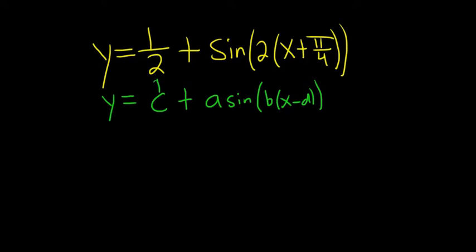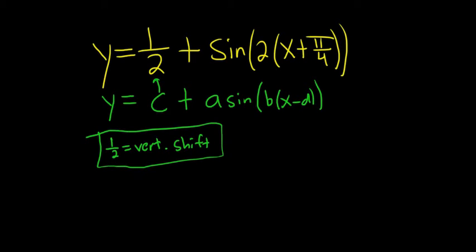For example, c here is the vertical shift. So 1 half, that's our vertical shift or vertical translation. That means it's going to take this function and add 1 half to it, so it's going to shift the whole thing up by 1 half.